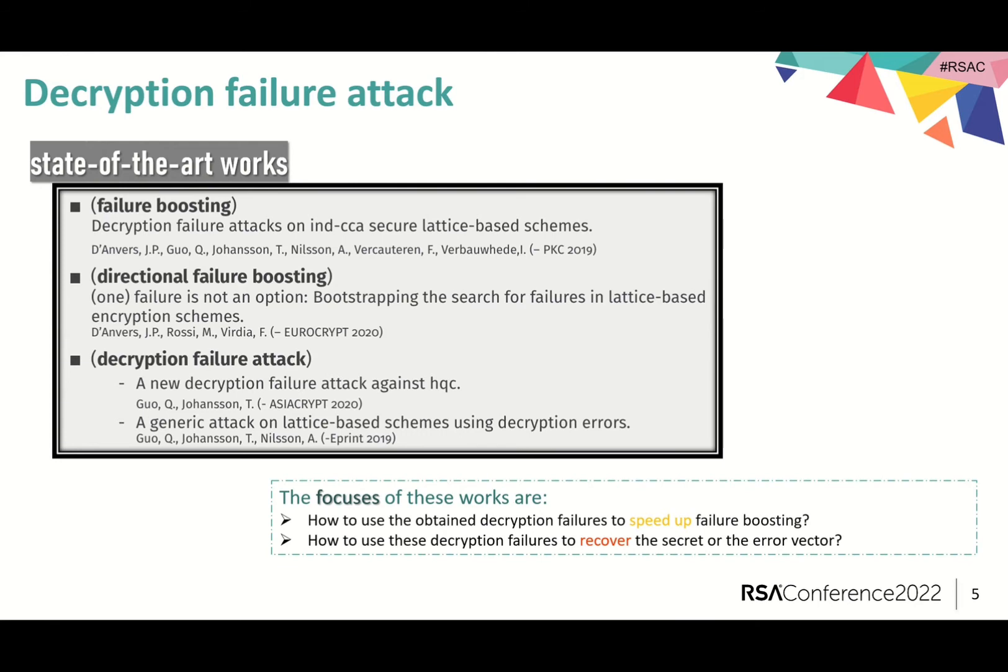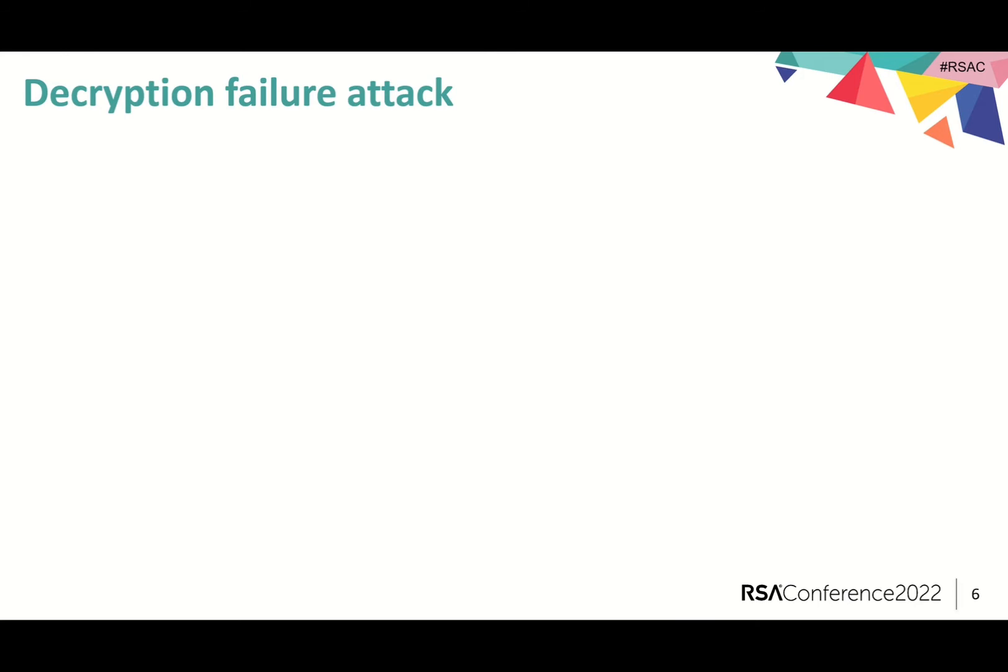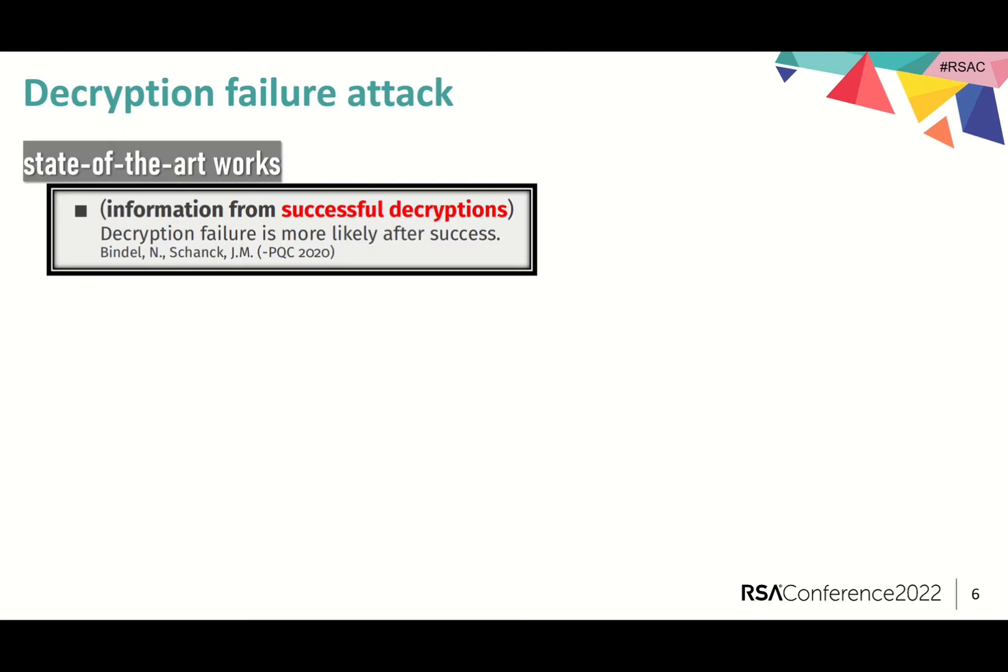In 2020, Dachman-Soled and Huguenin-Dumittan considered the problem from a new angle by arguing that for an imperfectly correct lattice-based public key encryption scheme, information about the private key can be leaked even when the answers for decryption queries are successful. In other words, they use the information from successful decryptions to speed up failure boosting.